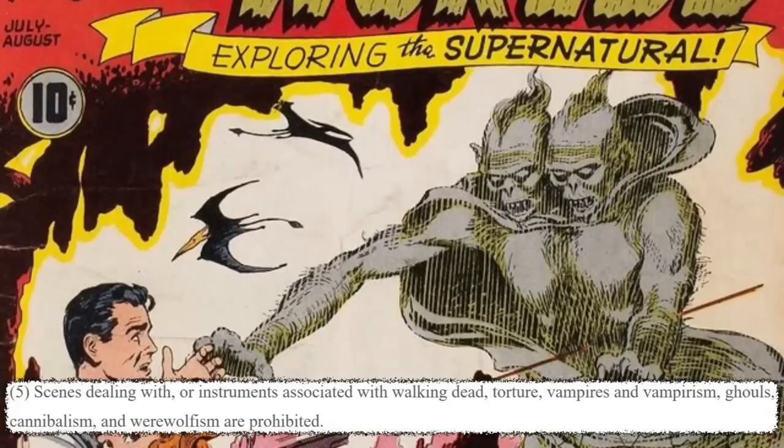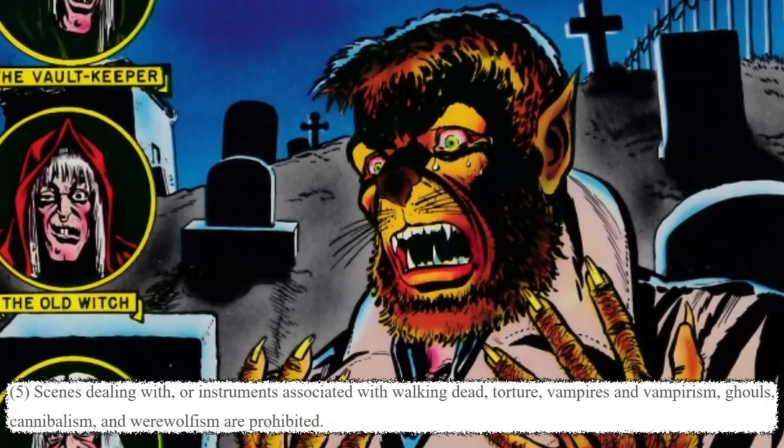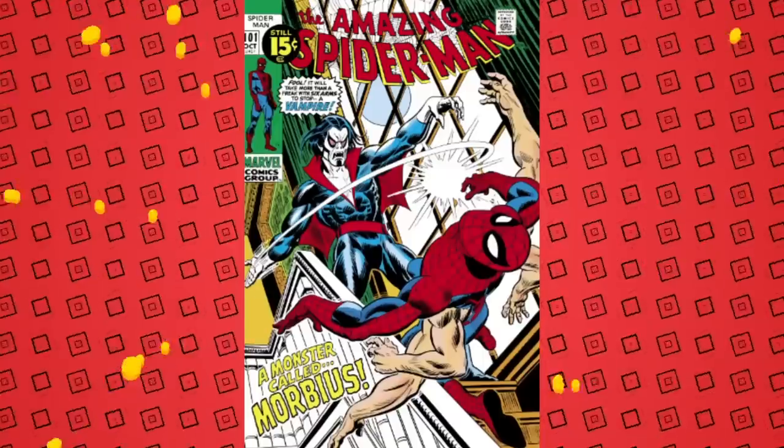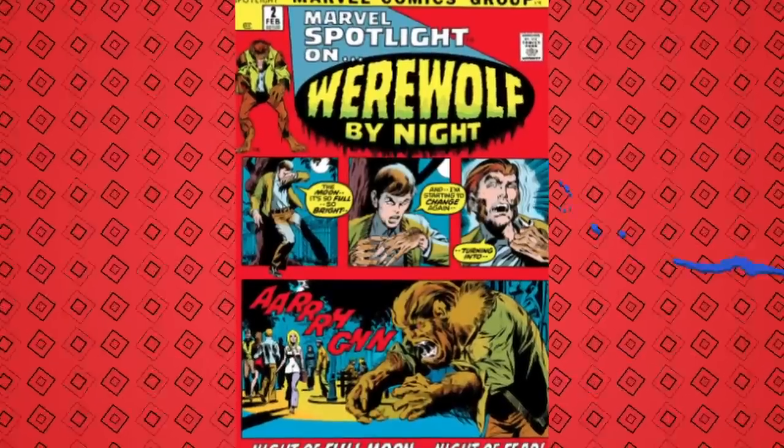Rule five, the last one for General Standards B: scenes dealing with or instruments associated with walking dead, torture, vampires and vampirism, ghouls, cannibalism, and werewolfism are prohibited. So all those supernatural creatures — goodbye, until later. They'll start sneaking back in, especially in 1971 when the code is revised. The new version lets you have vampires and werewolves, but not zombies — because zombies weren't considered to have enough of a literary background.